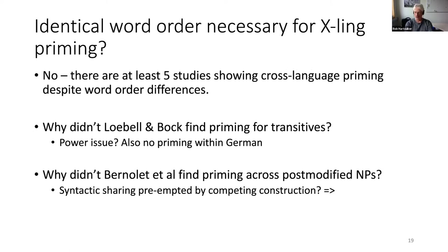So: is an identical word order necessary for cross-linguistic priming? The answer is no — there are at least five studies showing cross-language priming despite word order differences. You might ask why Levelt and Bock found no priming for transitives — it could have been a power issue, and importantly there was no priming for transitives even within German in their study. But what about Werner et al.? They had enough power to find clear within-language priming, so that couldn't be a power issue.